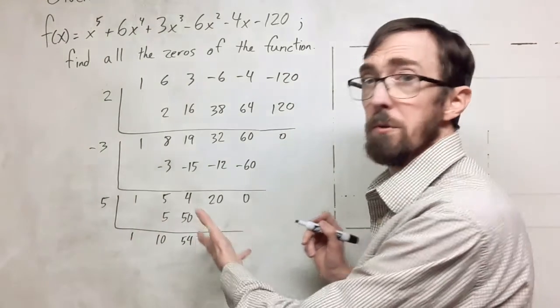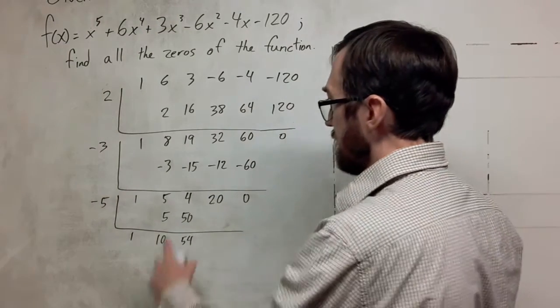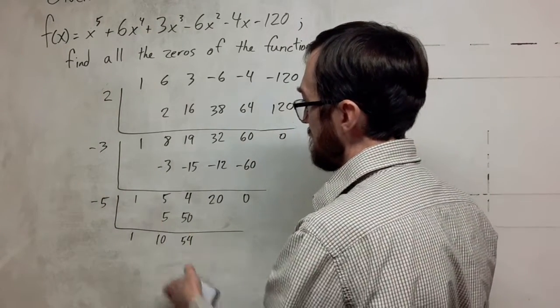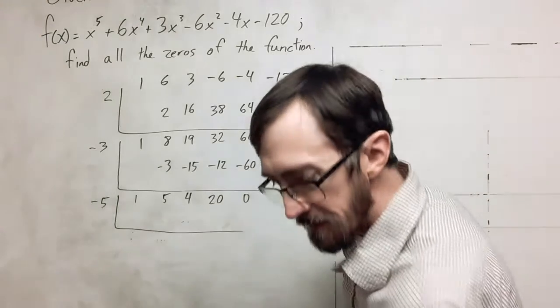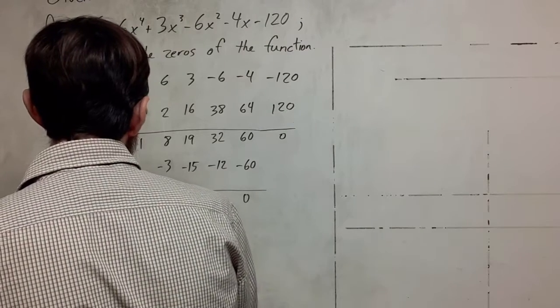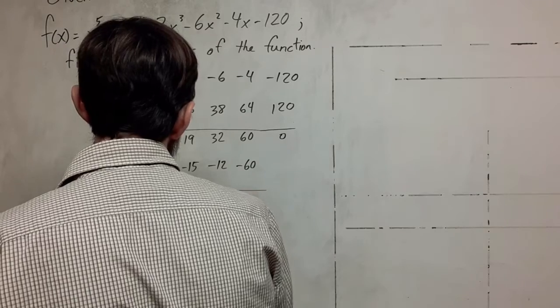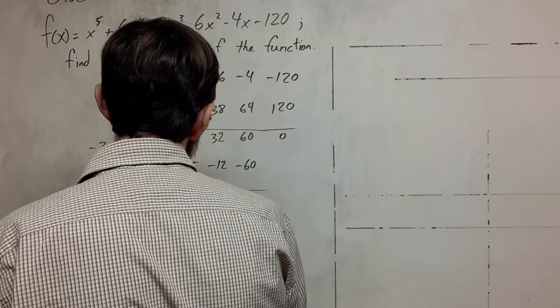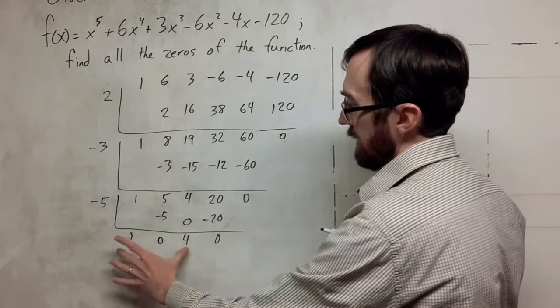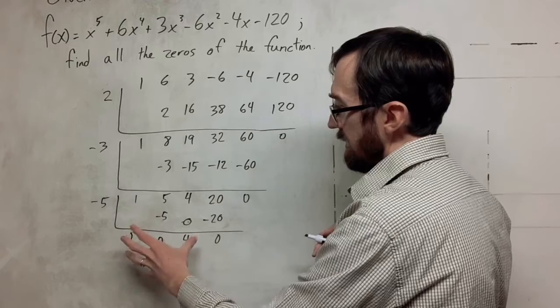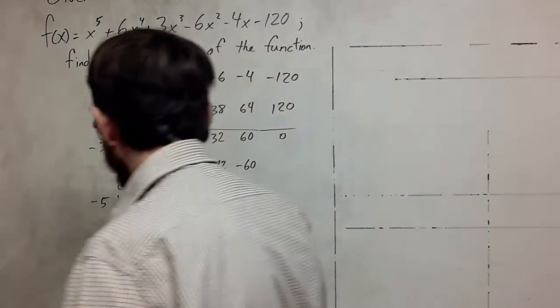We can see that 5, the number continues to increase, so I'm going to switch this to a negative and we'll try a negative. We can already see that the negative is going to be to our advantage there. And when we do the negative 5, we do end up with a 0 here and we have these three terms, which would be the A, the B, and the C for the quadratic formula.